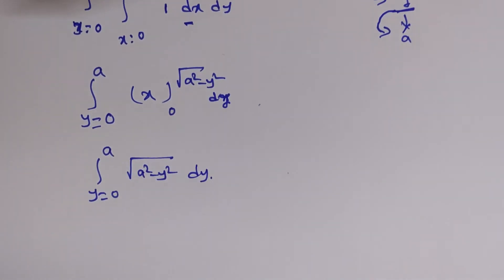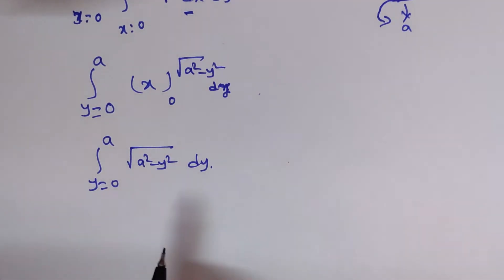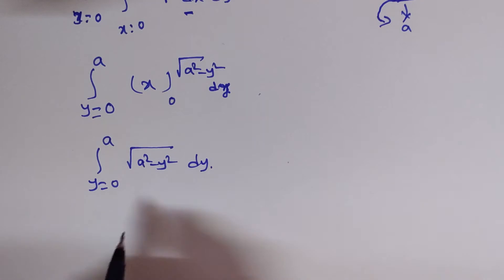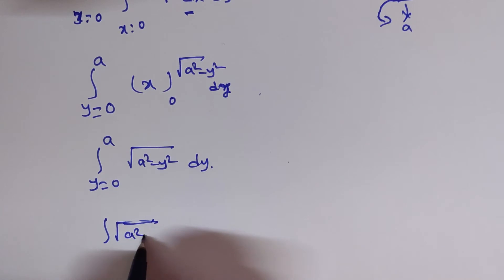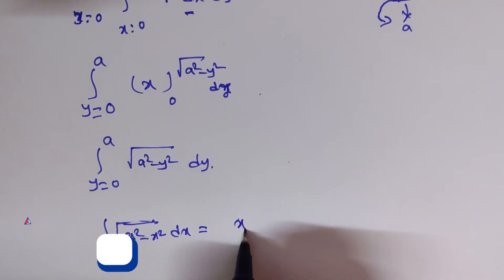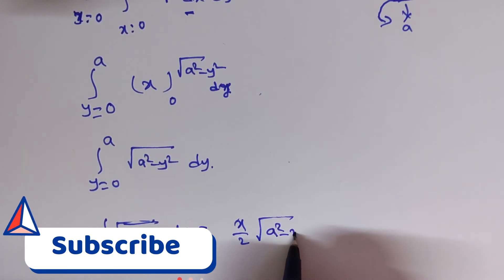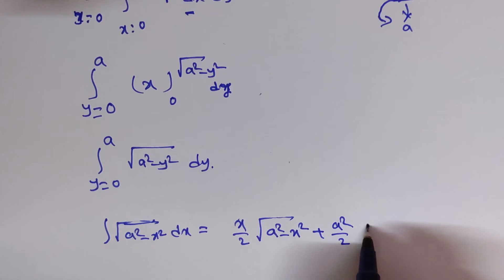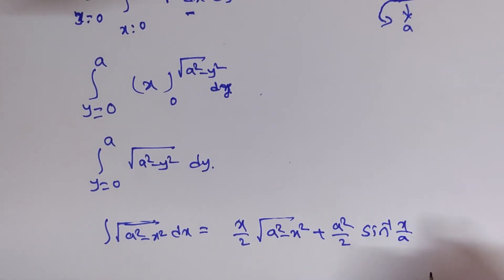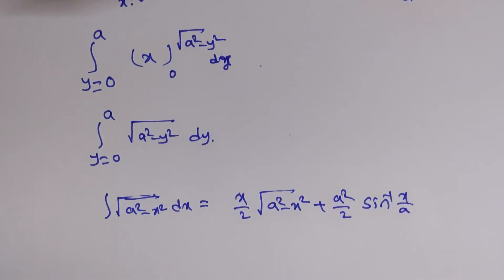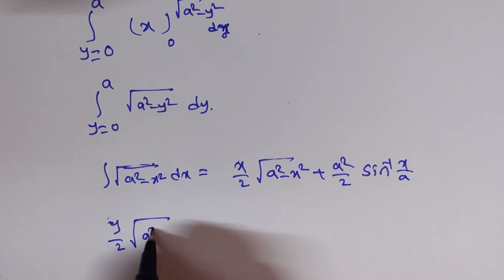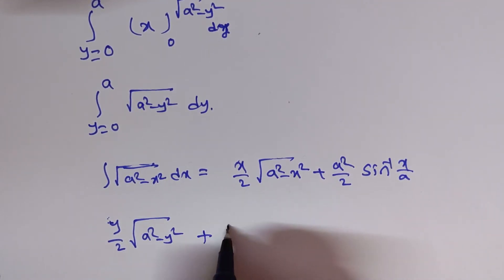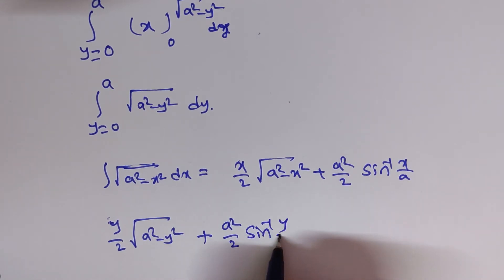This problem can be done in two methods — one using polar form, or using the standard formula. The formula is: ∫ √(a² − x²) dx = (x/2)√(a² − x²) + (a²/2) sin⁻¹(x/a). Replacing x by y, the integral becomes: (y/2)√(a² − y²) + (a²/2) sin⁻¹(y/a), evaluated from y = 0 to y = a.